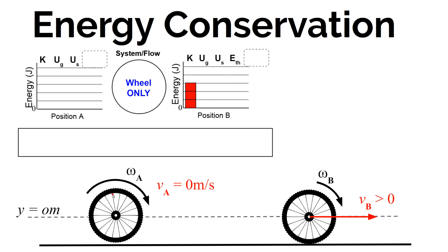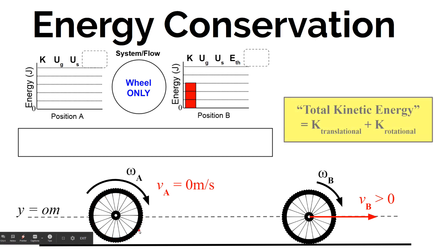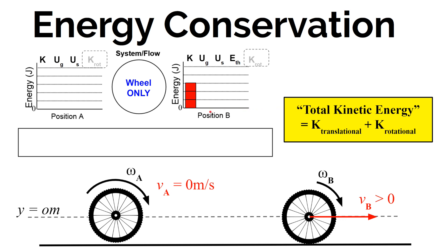We can't say the tire has translational kinetic energy, but we can say it has rotational kinetic energy — due to the individual kinetic energies of all the individual pieces of that object moving through space around the pivot point. So we're going to define something new: total kinetic energy, which is the sum of the translational kinetic energy and the rotational kinetic energy an object has. An object can store energy in both accounts separately.